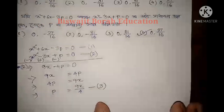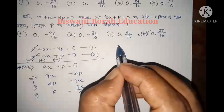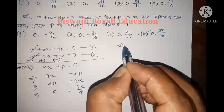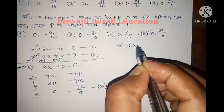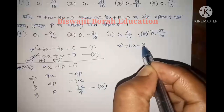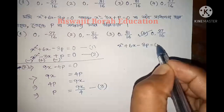I am going to substitute back into equation 1: x squared plus 6x minus 3p equals 0.